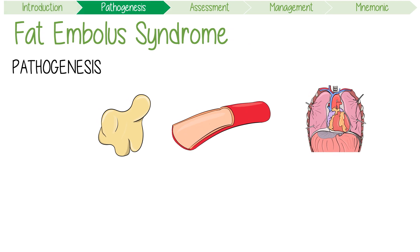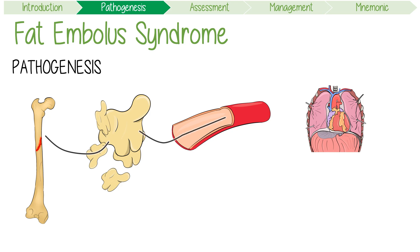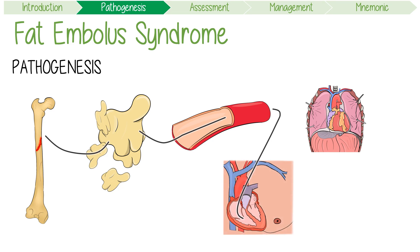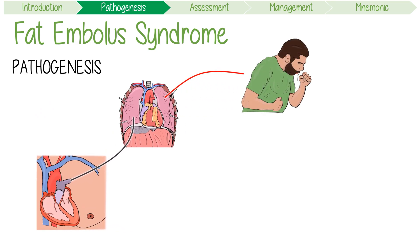Let's discuss its pathogenesis in a little bit more detail. After a long bone or pelvic fracture, fat can be released from the bone marrow and enter the venous circulation. Eventually, it moves through the right side of the heart, where it's ejected into the lungs through the pulmonary artery. Consequently, these fat globules can collect, causing respiratory symptoms.